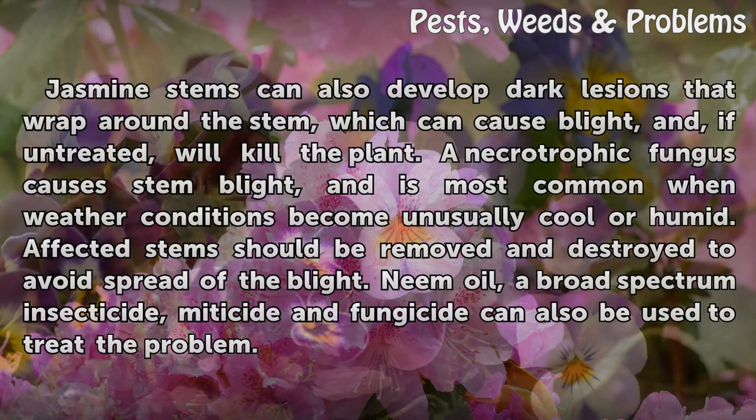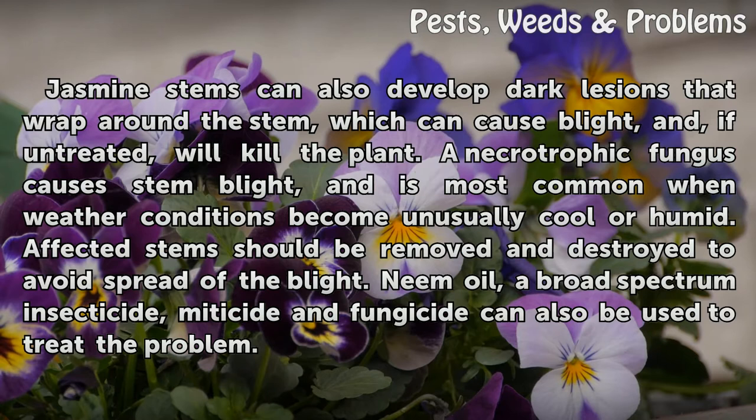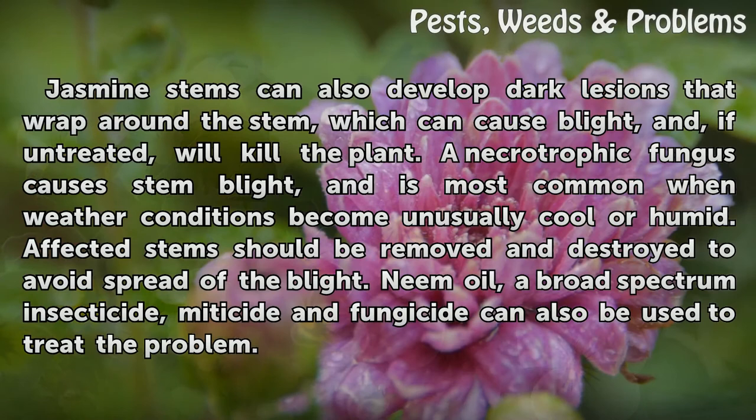Blight. Jasmine stems can also develop dark lesions that wrap around the stem, which can cause blight and, if untreated, will kill the plant. A necrotrophic fungus causes stem blight and is most common when weather conditions become unusually cool or humid. Affected stems should be removed and destroyed to avoid spread of the blight.